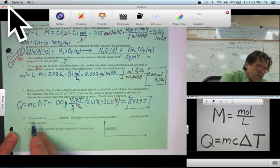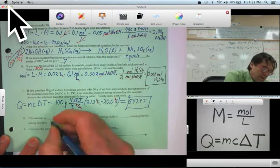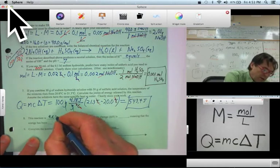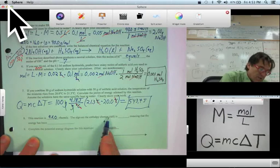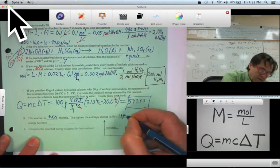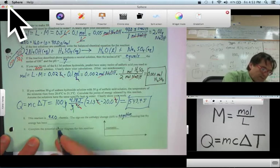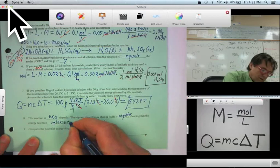Now, this reaction is, well, it gave off heat. It heated up the water, so it must be exothermic. And the sign on the enthalpy change, delta H, sign on delta H would be negative. Negative. Meaning that the energy has been released. Released. It's a product. Released.